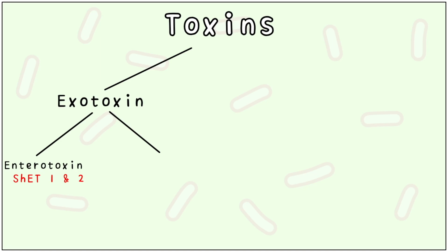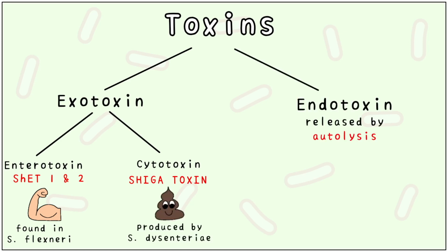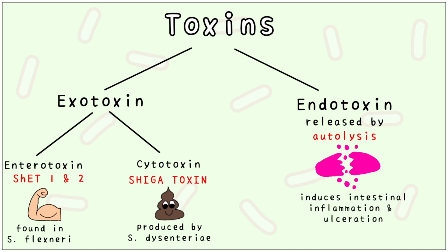Shigella produces two types of exotoxins: enterotoxin called Shigella enterotoxin type 1 and type 2, found predominantly in S. flexneri. It also produces a cytotoxin called Shigatoxin, produced by S. dysenteriae. Shigella also possesses an endotoxin, which is released by autolysis. This primarily causes intestinal inflammation and ulceration.